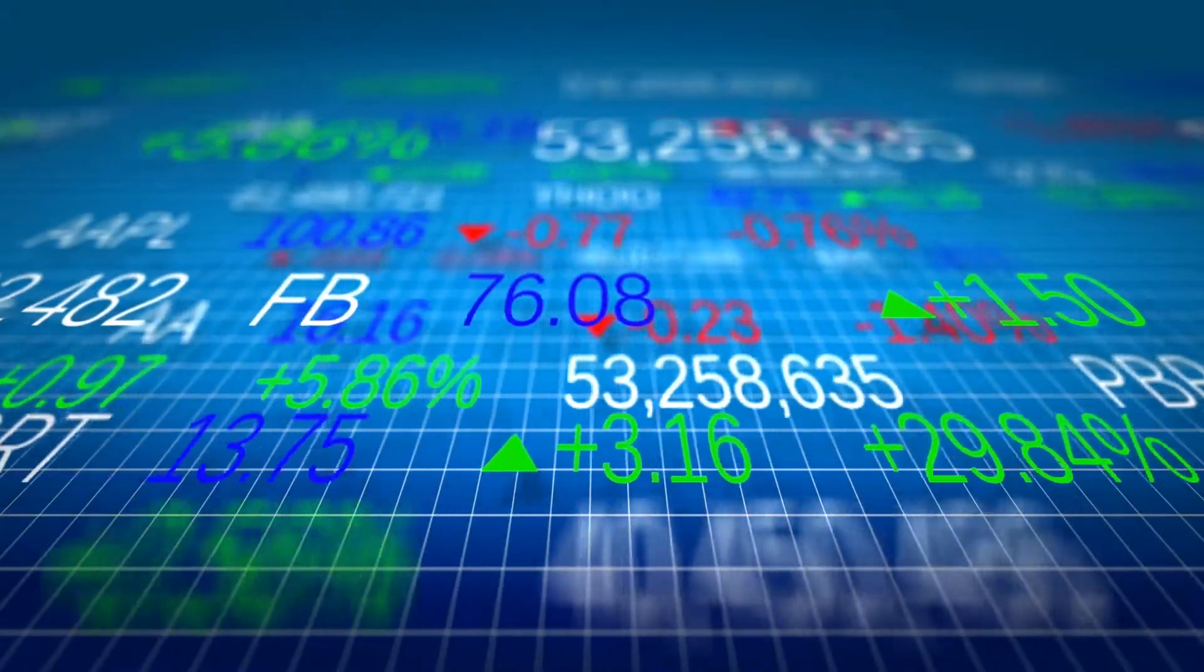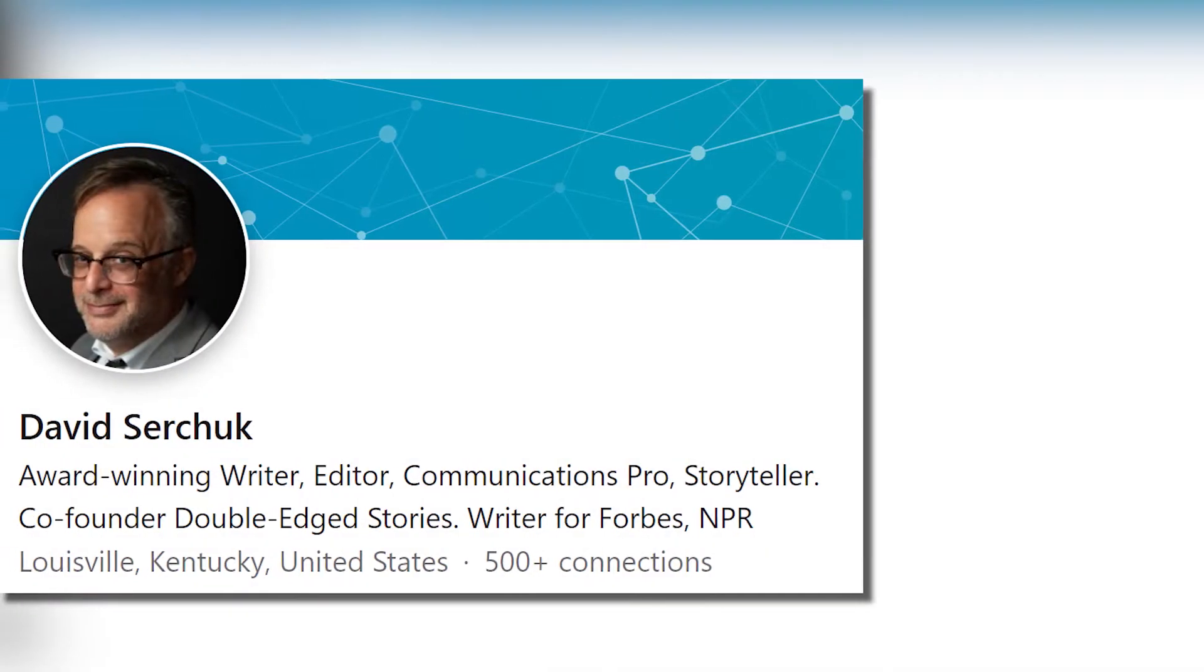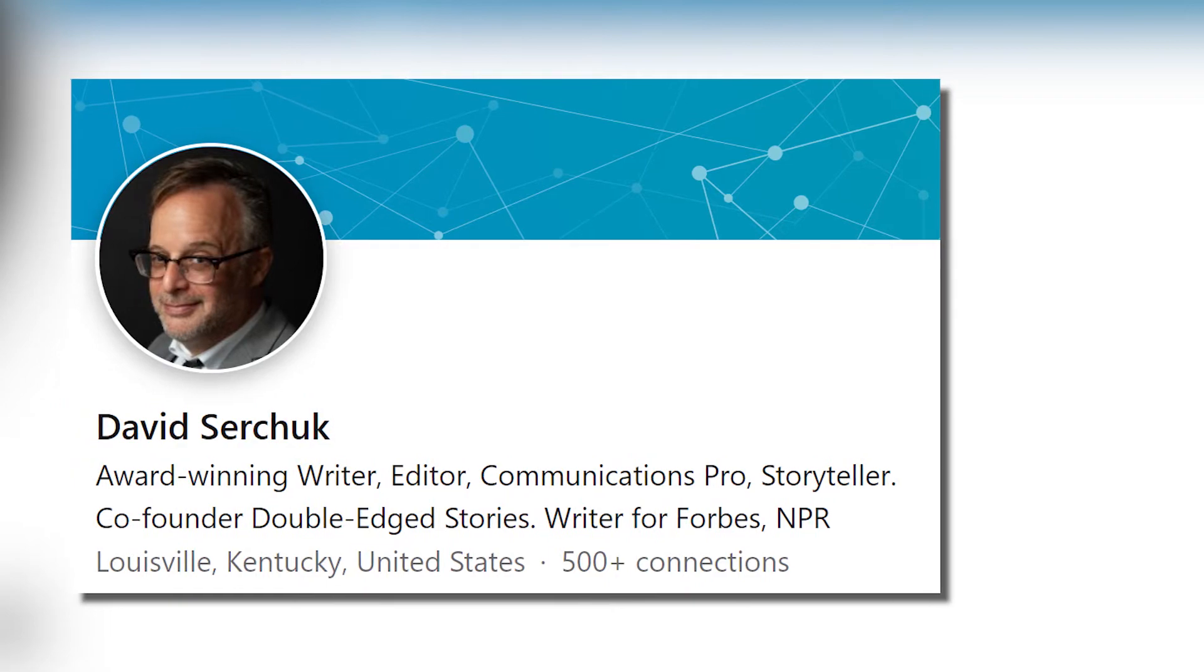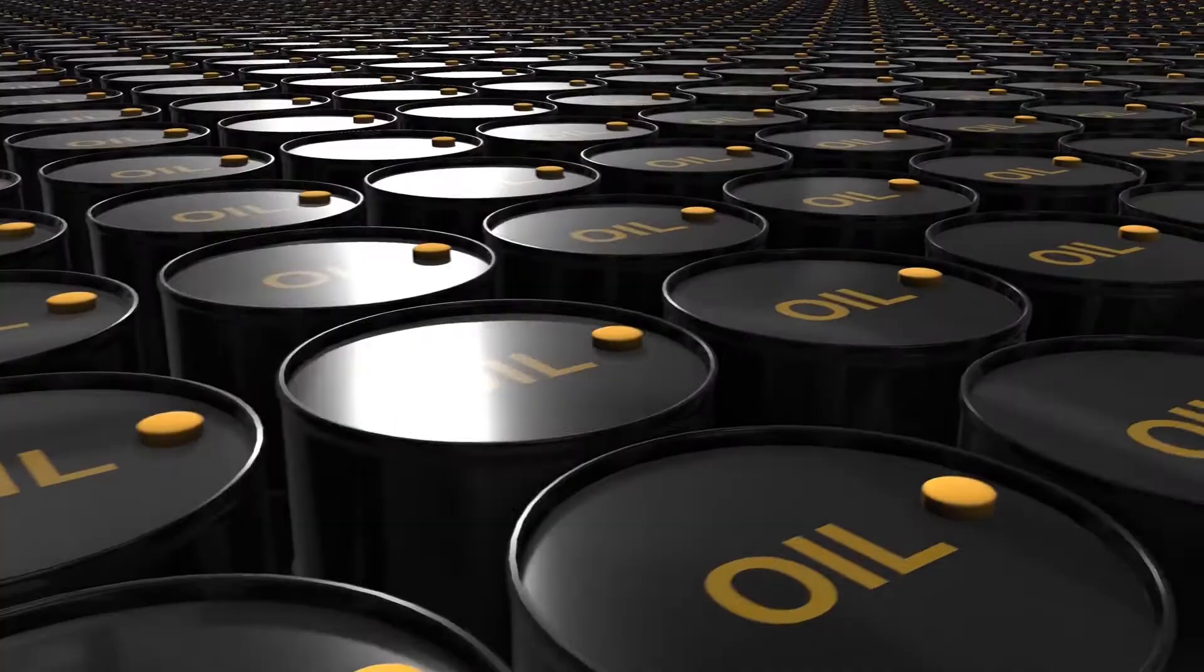Despite strong first-quarter earnings, many stocks were trading at low P/E ratios. On the same day, Forbes magazine David Surchuk predicted that the market would turn around when housing prices stabilize and oil prices rise again.